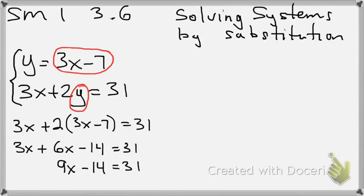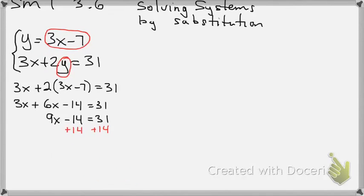So now I'm trying to get x by itself, so I need to get rid of this negative 14. So I'd get rid of it by adding 14 to both sides. And so now that would give me 9x equals 45.